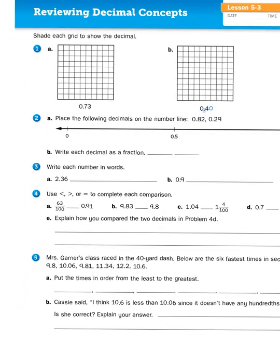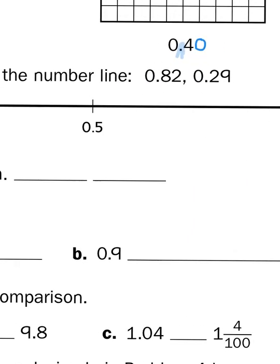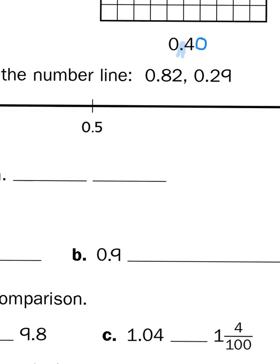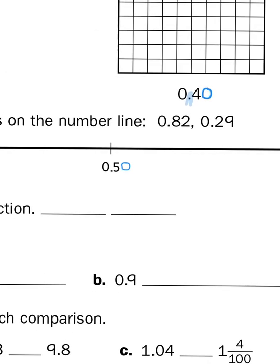So what are we doing here? We're plotting some numbers on the number line. Again, 0.5, that's to see if you're paying attention. 5 tenths or 0.5 is the same as saying 50 hundredths. So that makes it easier to compare where 29 hundredths and 82 hundredths go.